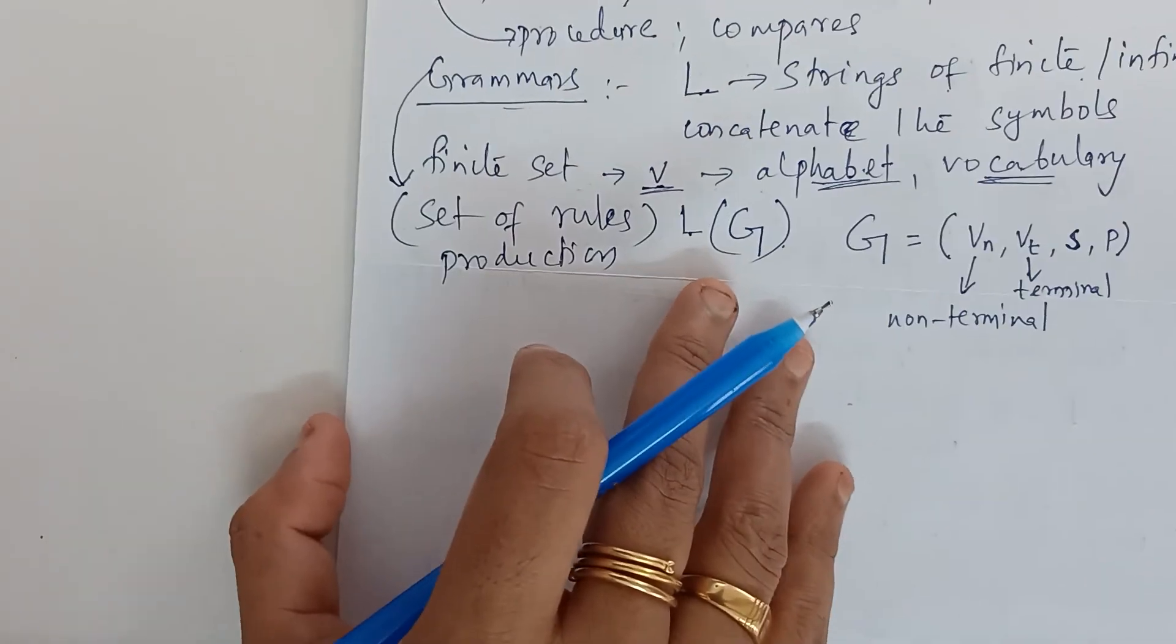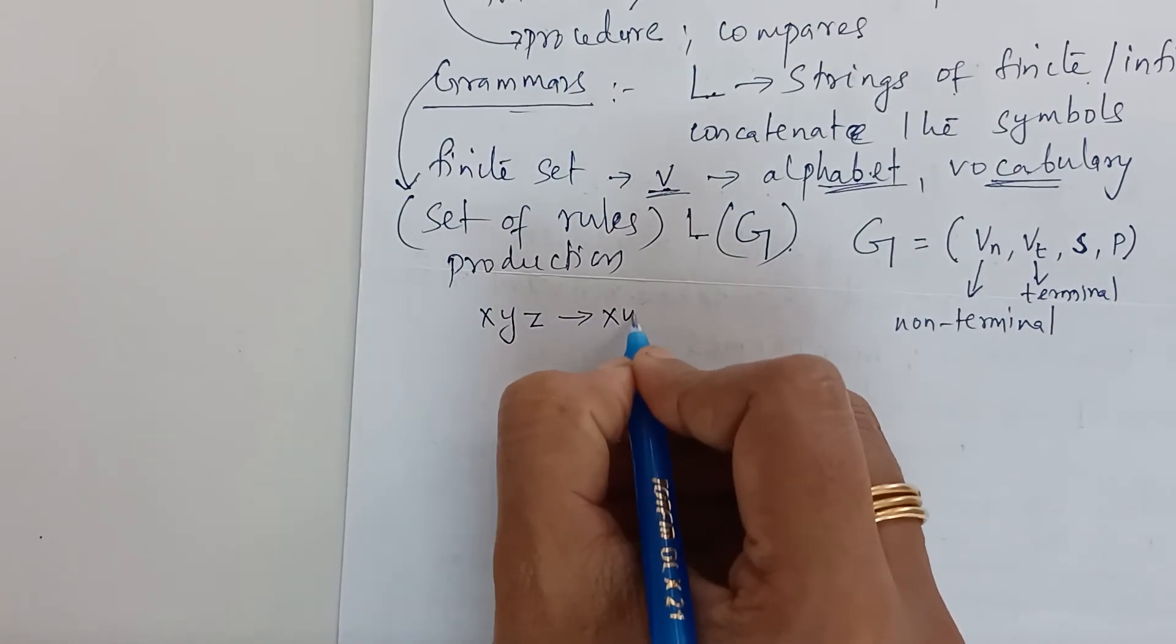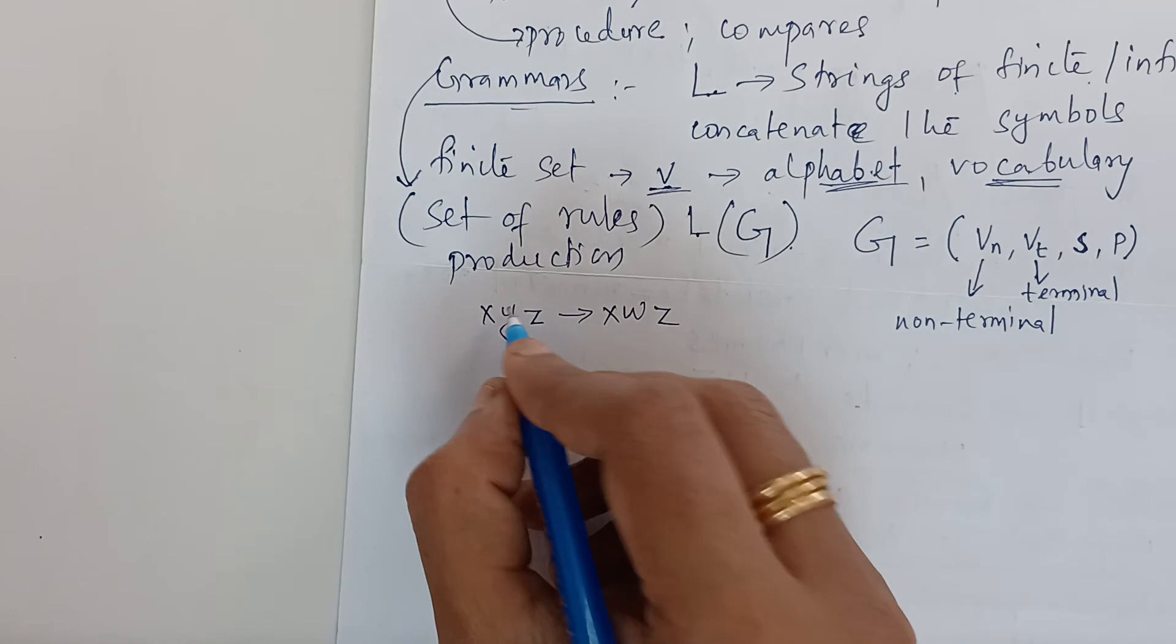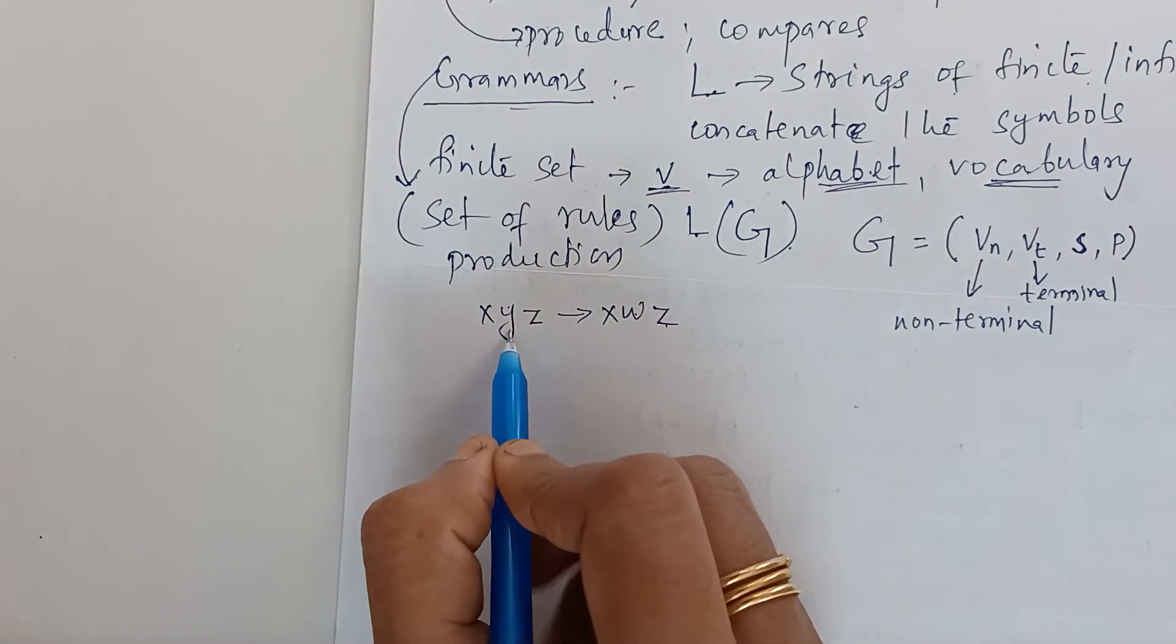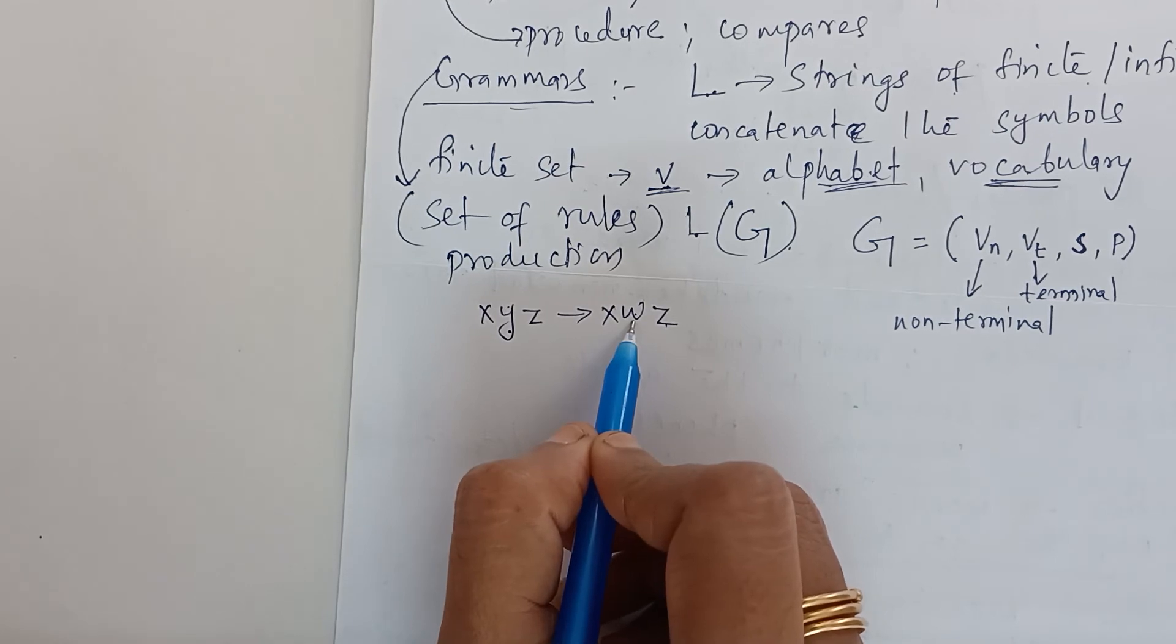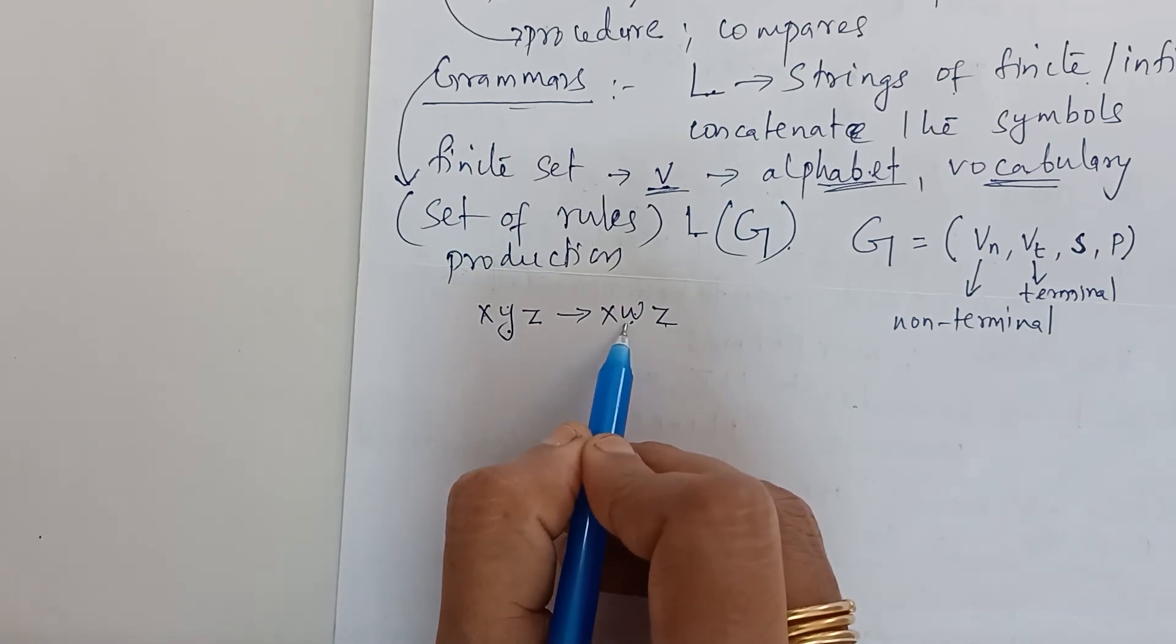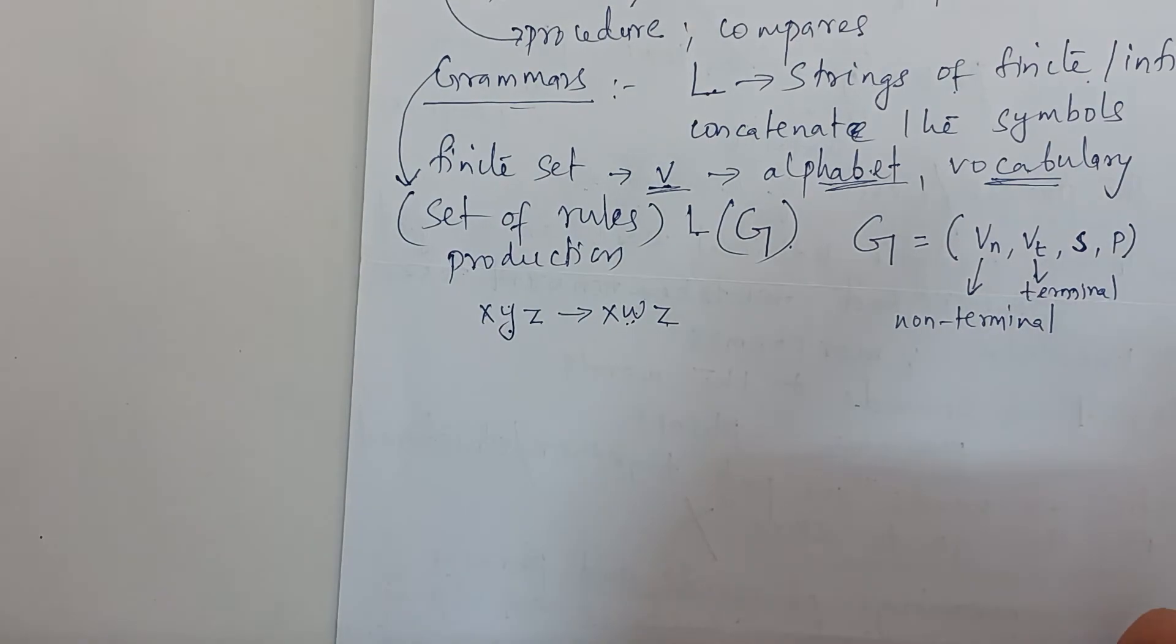A general production rule from P has the form XYZ to XWZ. That is a general production rule from V. X, Y, Z and W they are all strings from V. And this rule states that Y should be rewritten as W in the context of X to Z, where X and Z can be any string including the empty string.